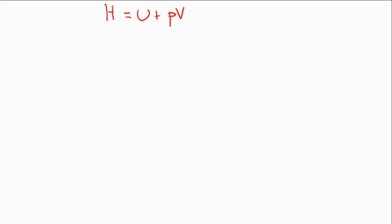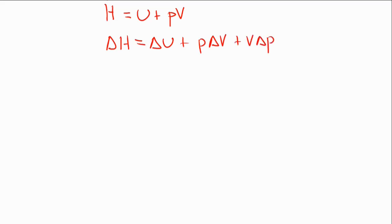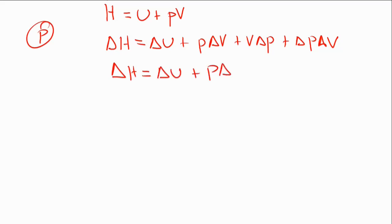Using absolute values for thermodynamic parameters is difficult, so we prefer relative values — enthalpy change rather than enthalpy itself. Differentiating H equals U plus PV gives: delta H equals delta U plus P delta V plus V delta P plus delta P delta V. If the pressure is constant, this simplifies to delta H equals delta U plus P delta V. The enthalpy change equals the internal energy change plus the product of pressure and the volume change.